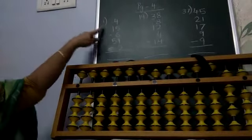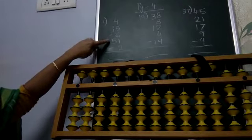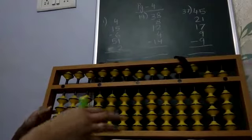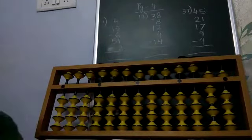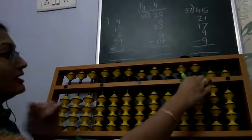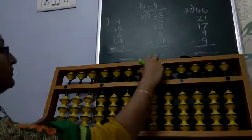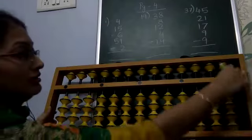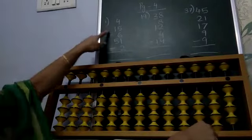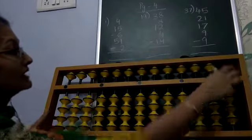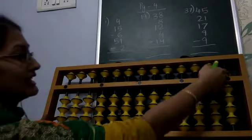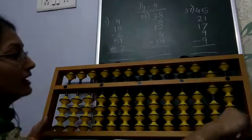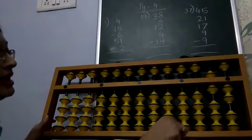Question number 1 is: 4 plus 15 minus 6 plus 51 minus 2. On the abacus, first clear it, then add 4 on the ones place, then 15 — 1 in the tens place and 5 in the ones place. Minus 6 can be done directly. After that, add 51, which is 50 and 1, then minus 2. Our answer is 62.